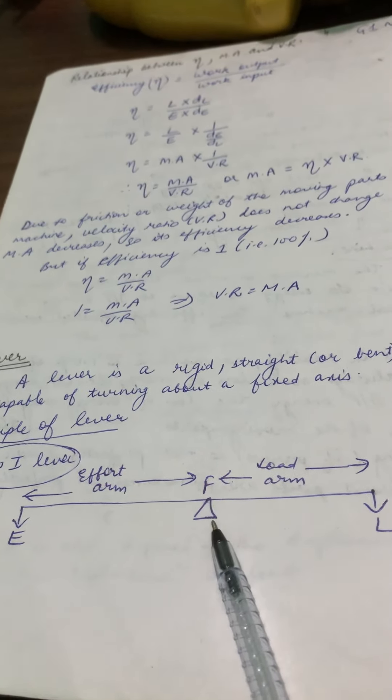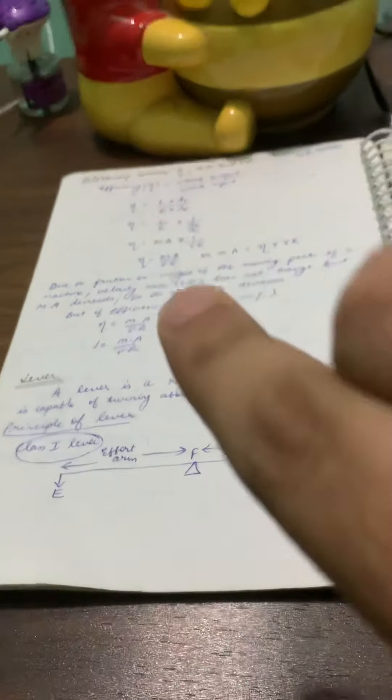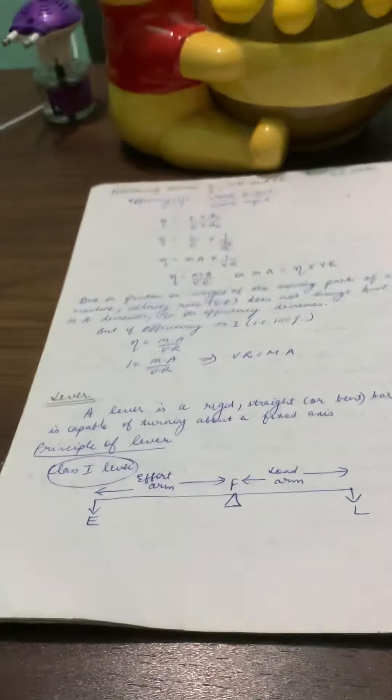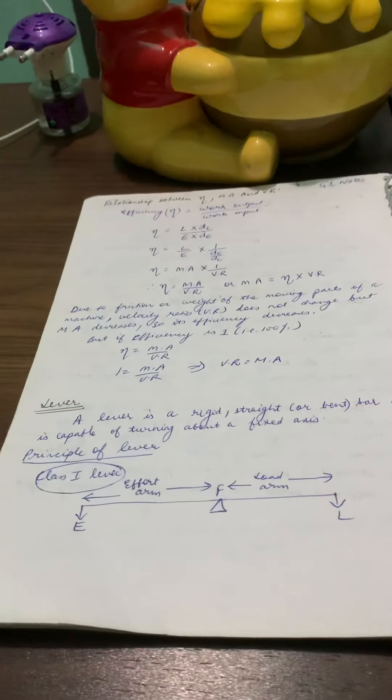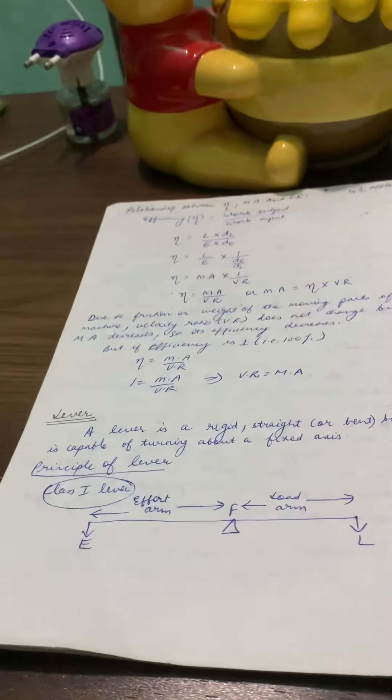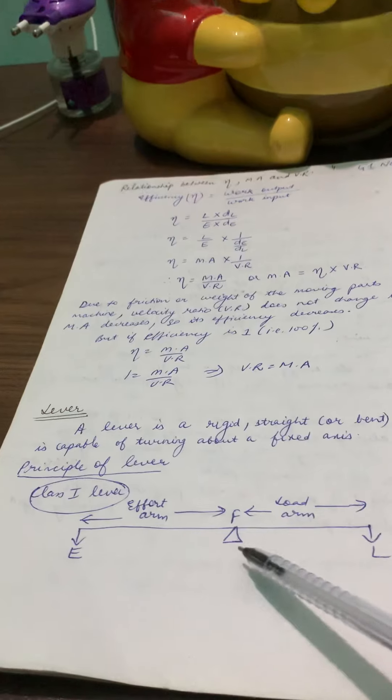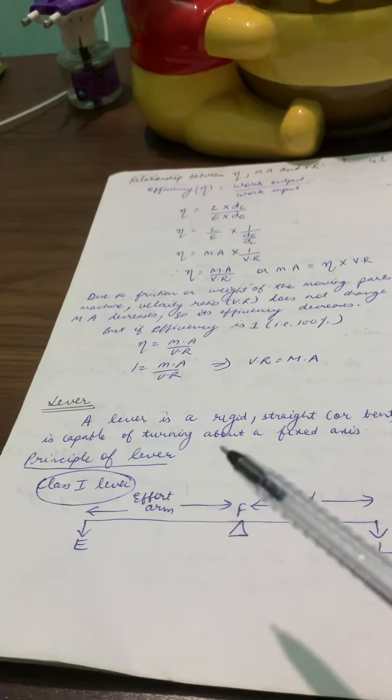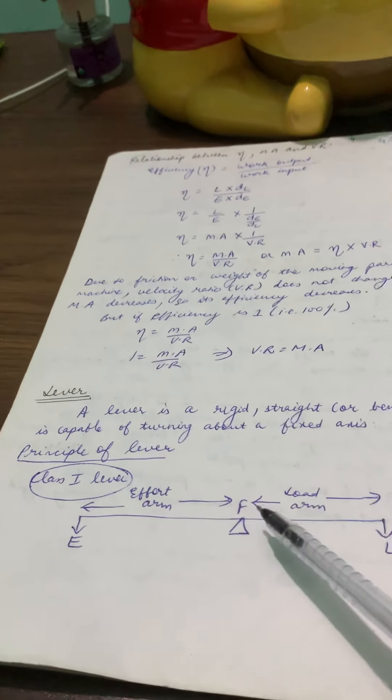This is a fixed axis. The lever can rotate and move about it. We call this fixed end the fulcrum.